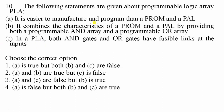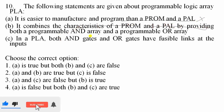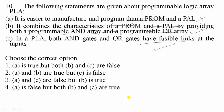Question 10: Regarding Programmable Logic Arrays (PLA). Statement 1 — it is easier to manufacture and program than PROM and PAL — is false. Statement 2 — it combines characteristics of PROM and PAL by providing both a programmable AND array and programmable OR array — is true. Statement 3 — in PLA, both AND gates and OR gates have fusible links at the inputs — is also correct. In PAL, only AND gates are programmed; in PROM, only OR gates; in PLA, both. Option 4 is correct.